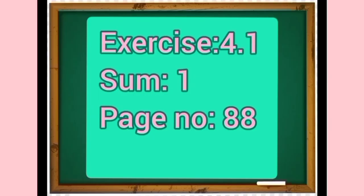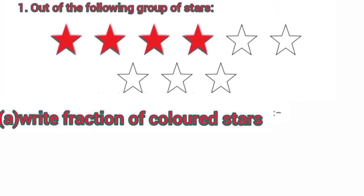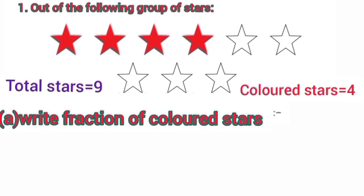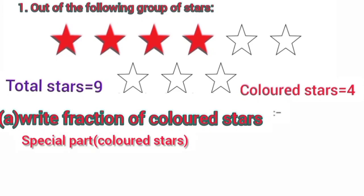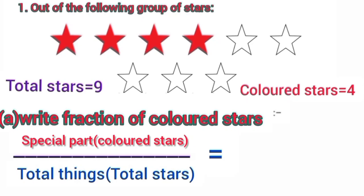On the basis of fraction of groups, let's do sum number 1. Dear students, out of the following group of stars, write the fraction of colored stars. Total stars are 9, and how many stars are colored? We have 4 stars which are colored. So the fraction of colored stars is colored stars upon total stars. Fraction is 4 upon 9, where 4 is the numerator and 9 is the denominator.